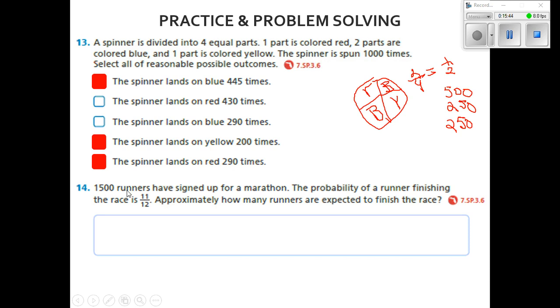Number 14 says 1,500 runners have signed up for a marathon. The probability of a runner finishing the race is 11 out of 25. Approximately how many runners are expected to finish the race?